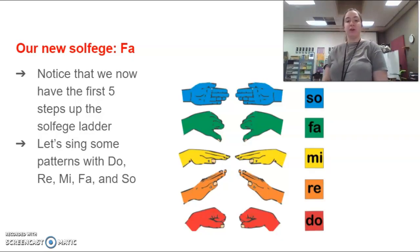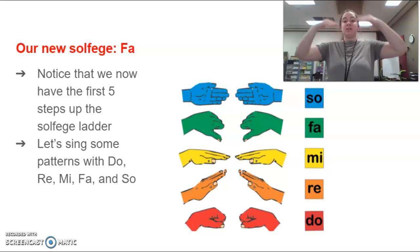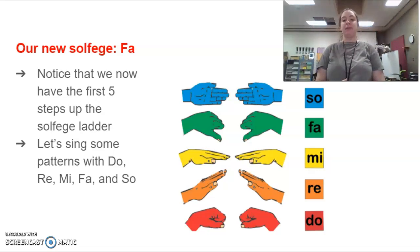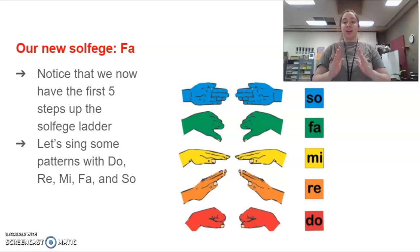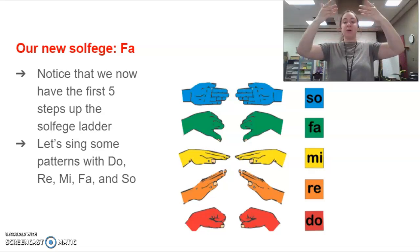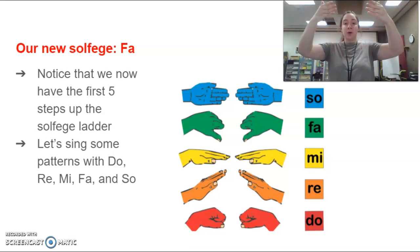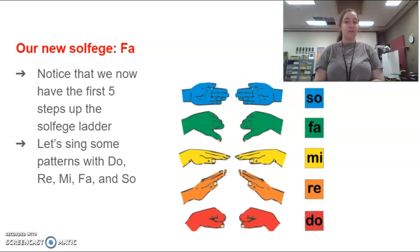Let's first talk about our new solfege: fa. Fa goes between mi and sol. This entire time you've been singing so and mi, there's been a lonely note in between — fa. I'm going to sing up the ladder so that you can hear what fa sounds like with the other notes, then I'd like you to repeat after me. Do, re, mi, fa, so. Your turn — use your hand signs. Do, re, mi, fa, so. That is what our fa sounds like.